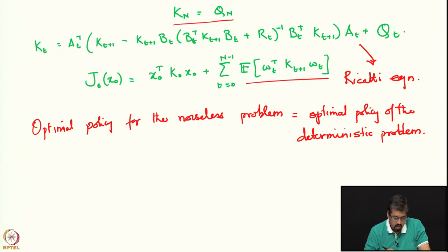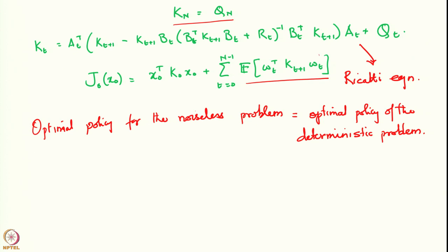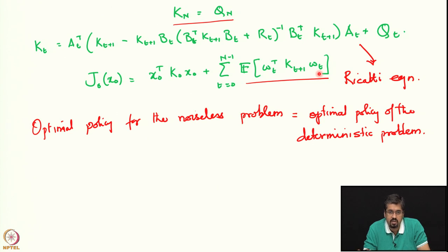The optimal cost depends on the variance of the noise, but the optimal policy depends only on the assumption that the noise has zero mean. Furthermore, the optimal cost depends only on the first two moments of the noise; the precise distribution does not matter. Two different sets of disturbances that match in their first two moments will yield the same optimal cost.